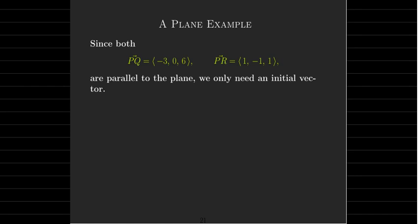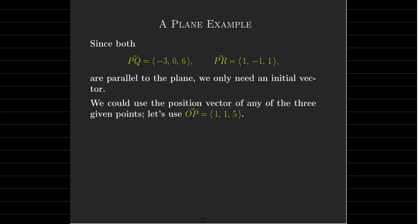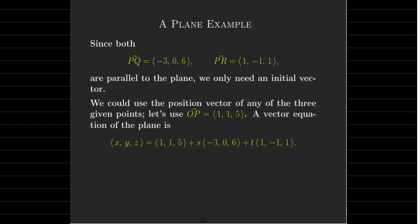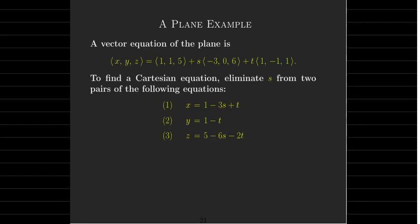Now we have our two vectors parallel to the plane. All we need is an initial vector — we can use the position vector OP for any of the three points, so I'll use OP. Now I have a vector equation of the plane with initial vector (1, 1, 5) and vectors PQ and PR. We'd like to write that as a Cartesian equation, so we repeat the same process: write it as a system of equations, then eliminate a parameter.